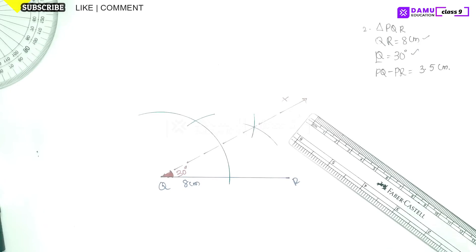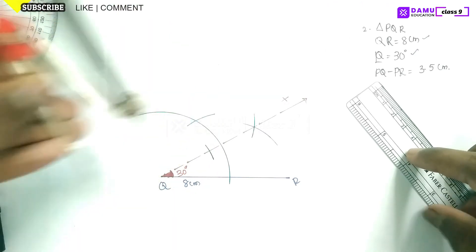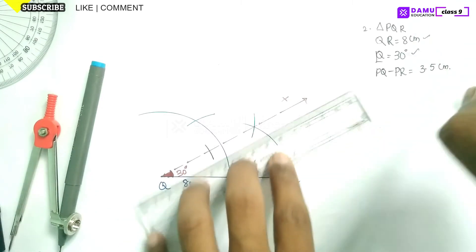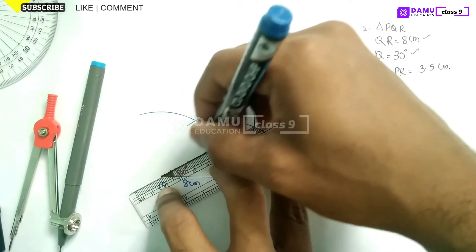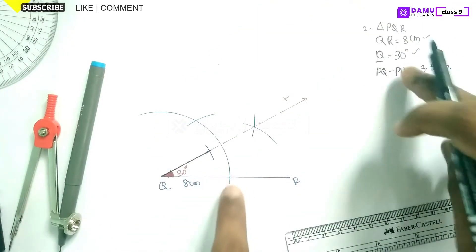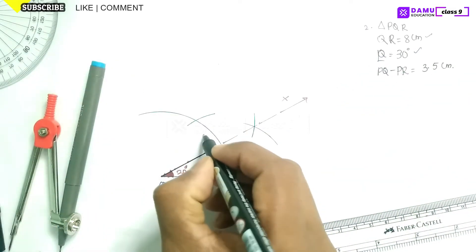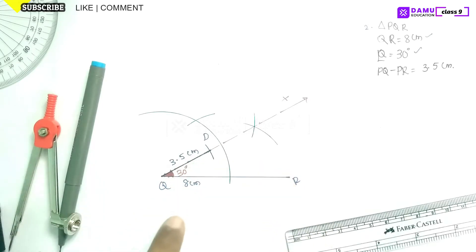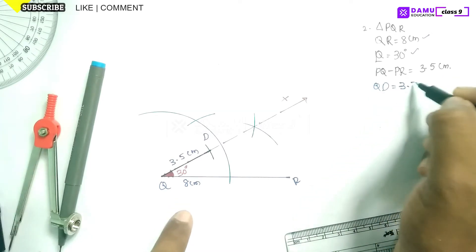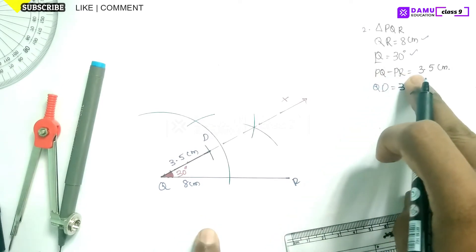From Q, draw an arc with length 3.5 centimeters along the ray. This point we call D. So QD is equal to 3.5 centimeters. We are making QD equal to PQ minus PR. That is the case here — QD equals PQ minus PR, which is 3.5 centimeters.